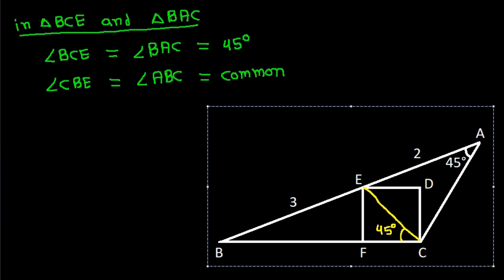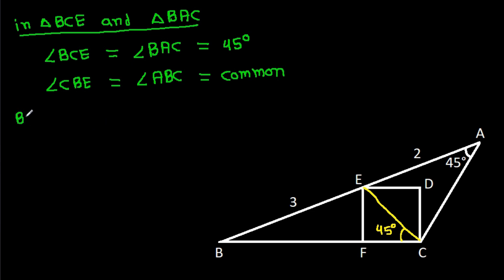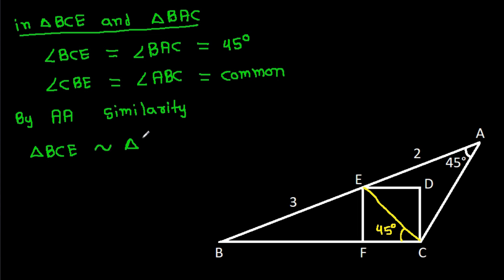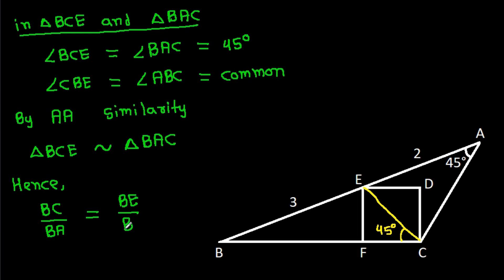By angle-angle similarity, triangle BCE is similar to triangle BAC. Hence, BC over BA is equal to BE over BC.